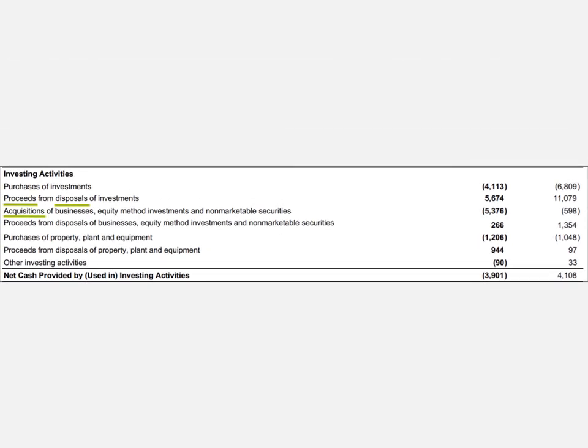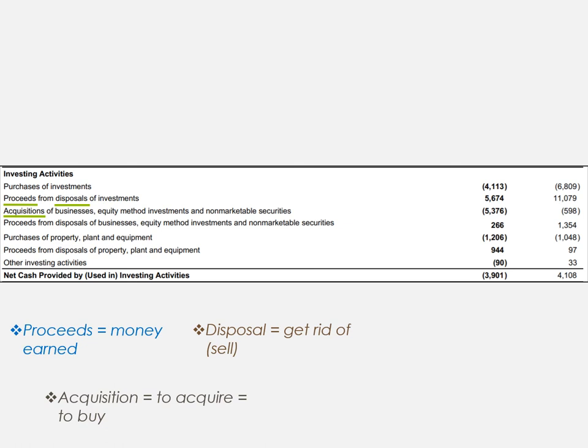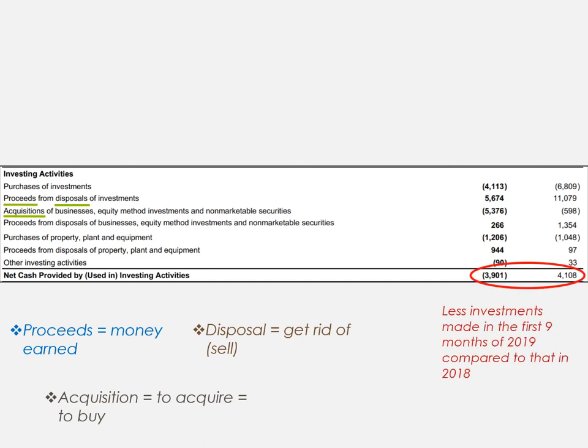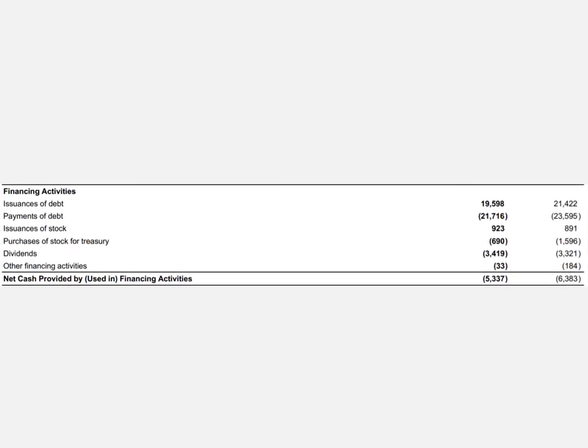You'll see the same process for investing activities. Some useful terms: 'proceeds' means money coming in; 'disposal' means getting rid of something by selling it; and 'acquisition' means buying something. Once again, they arrive at the net cash as a result of investing activities, and the same process applies for financing activities, giving you the final cash balance after all inflows and outflows.